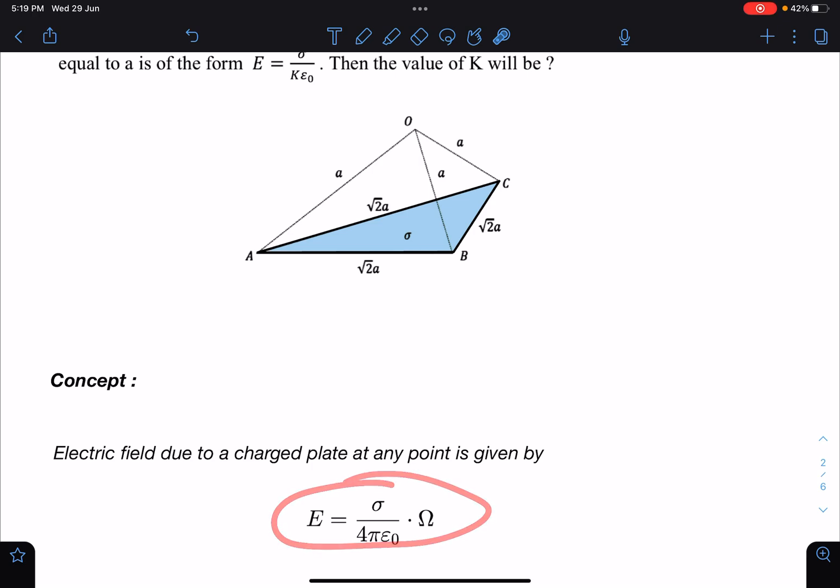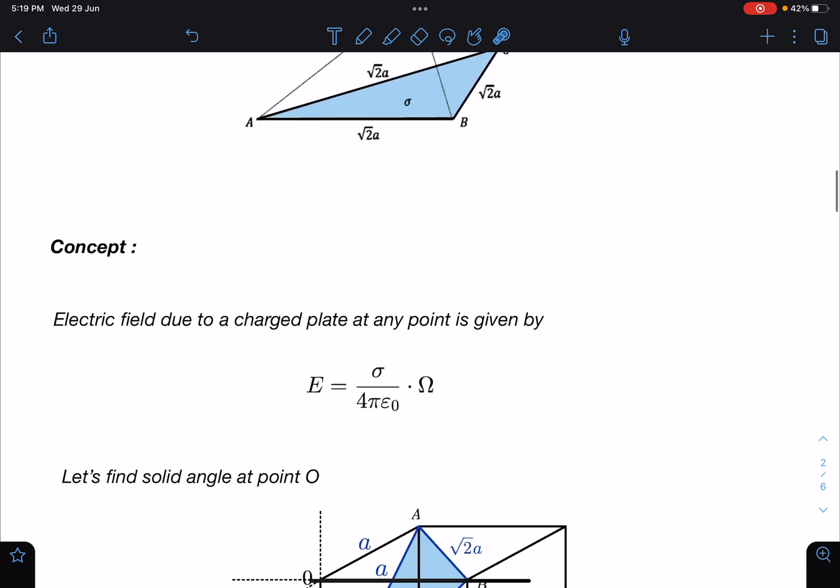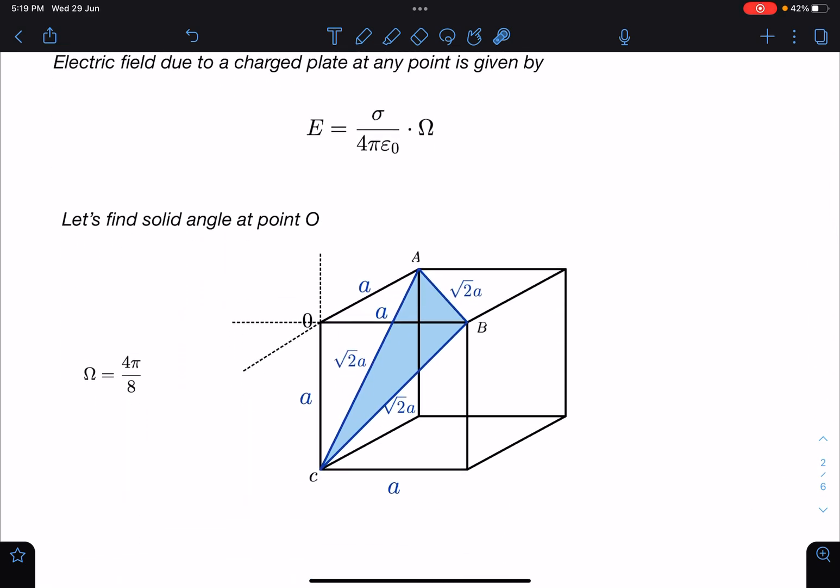The derivation of this is very simple because instead of q you will be writing it as σ dA, and 1/r², so dA/r² will give you σΩ, where Ω is the solid angle.